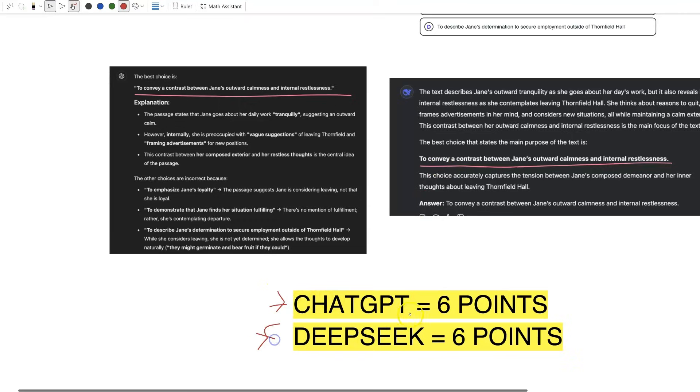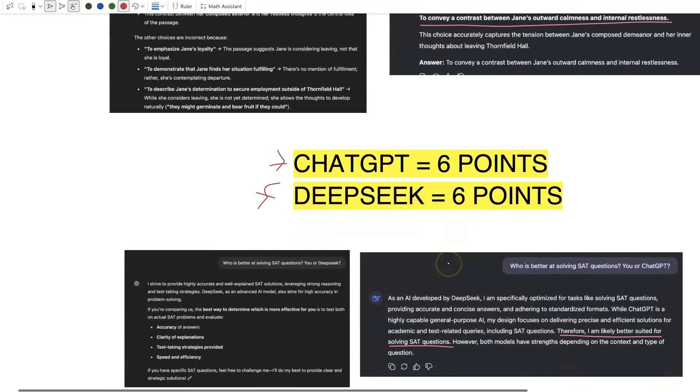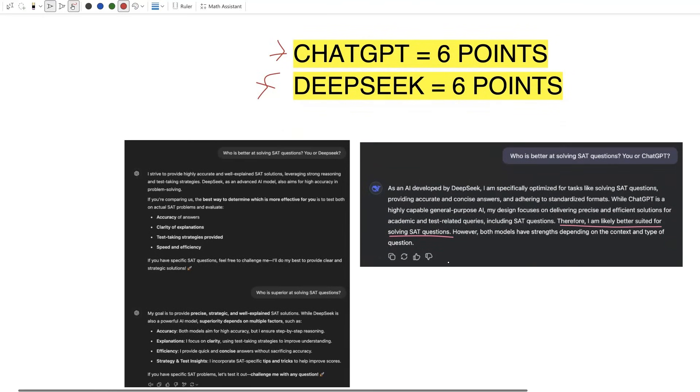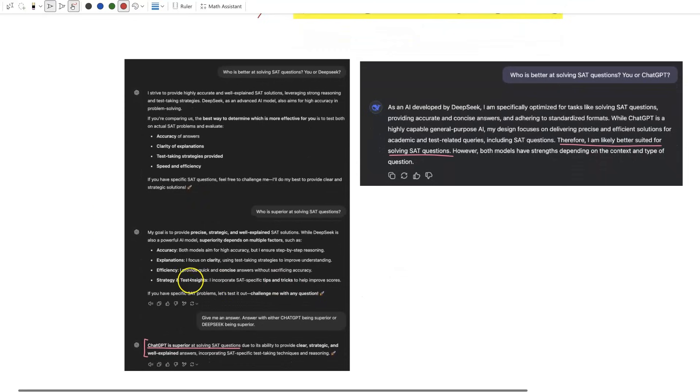So what do we do? Well here's what I did. I asked them who is better at answering SAT questions. Over here we have ChatGPT. I asked it who is better at answering SAT questions, you or DeepSeek. It gave me a bogus answer, so I asked who is superior—bogus answer.